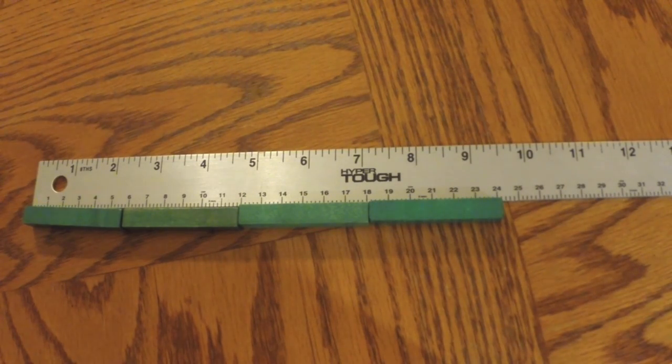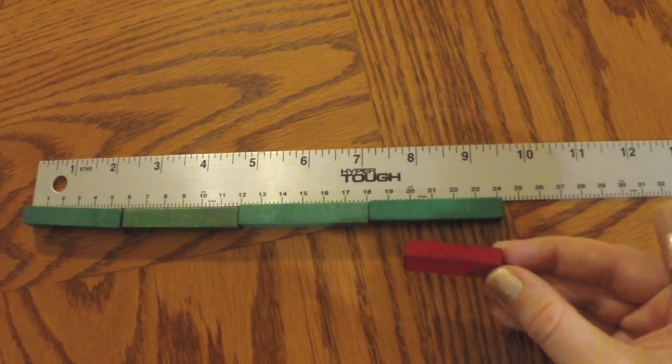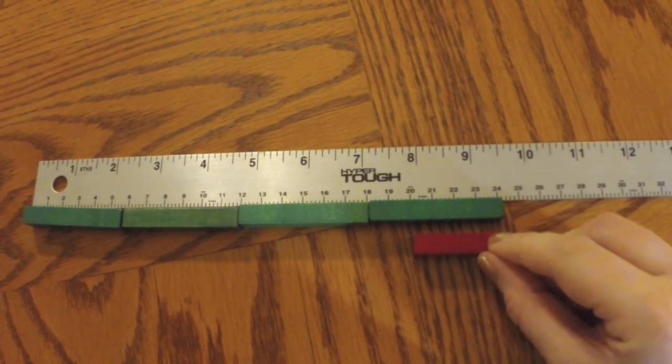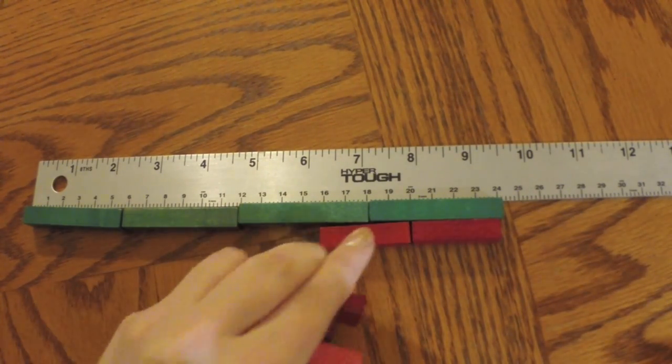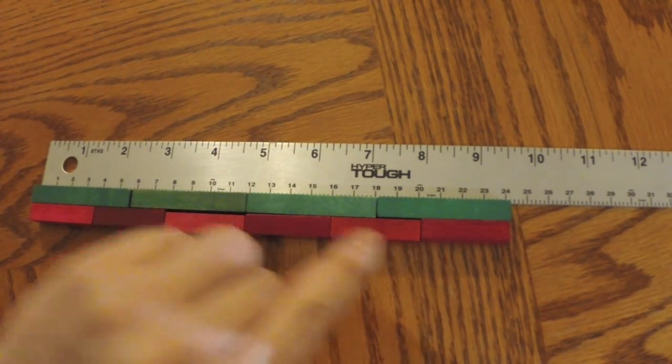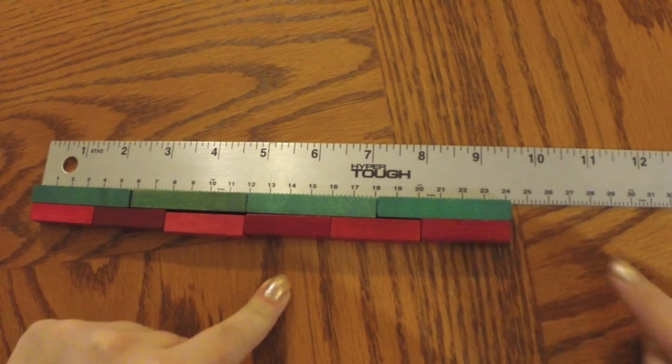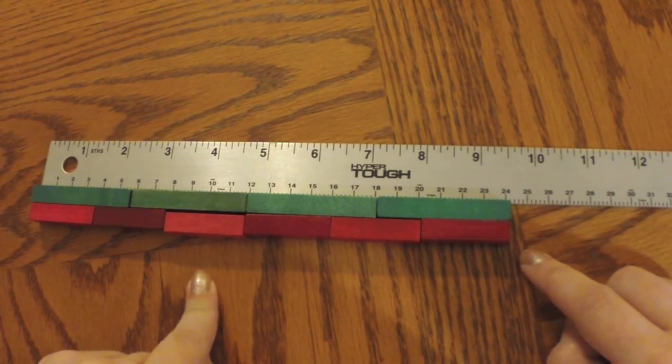And you can also do the same if you wanted to look at twenty-four divided by four. You can see how many rods fit between... There's one, two, three, four, five, six groups of four that fit between twenty-four and zero. So twenty-four divided by four is six.